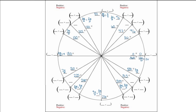Now let's do our pi/4 values. We start with pi/4 and add 2pi/4 each time, so we're using odd numbers all the way around: 1pi/4, 3pi/4, 5pi/4, 7pi/4.